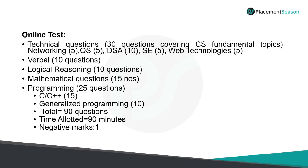The online test has two different sections: the aptitude section and the technical section. The aptitude section has quantitative questions, logical reasoning, and verbal reasoning — 35 questions in total. In the technical section, you have basic questions (30 in number) and programming questions (25 in number), putting together 55 questions. So the online test has a total of 90 questions to be solved in 90 minutes.